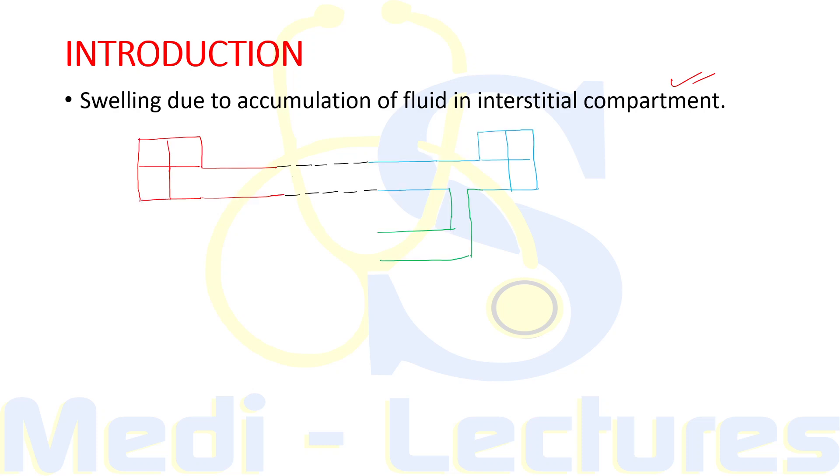To discuss the causes, we will discuss the mechanism of edema in brief. Let's suppose this is the heart, this is the left ventricle. Blood is traveling in the aorta, then arteries, arterioles.